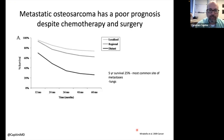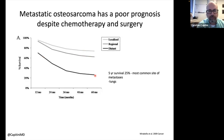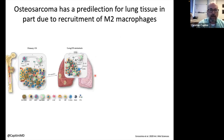Metastatic osteosarcoma continues to have a very poor prognosis despite chemotherapy with MAP and local control with surgery. This slide shows the marked difference between localized and regional disease over five years versus having metastatic disease, where outcomes are about 25% survival. We know that the most common site of metastasis is in the lungs, and so this remains an area of significant challenge for researchers.